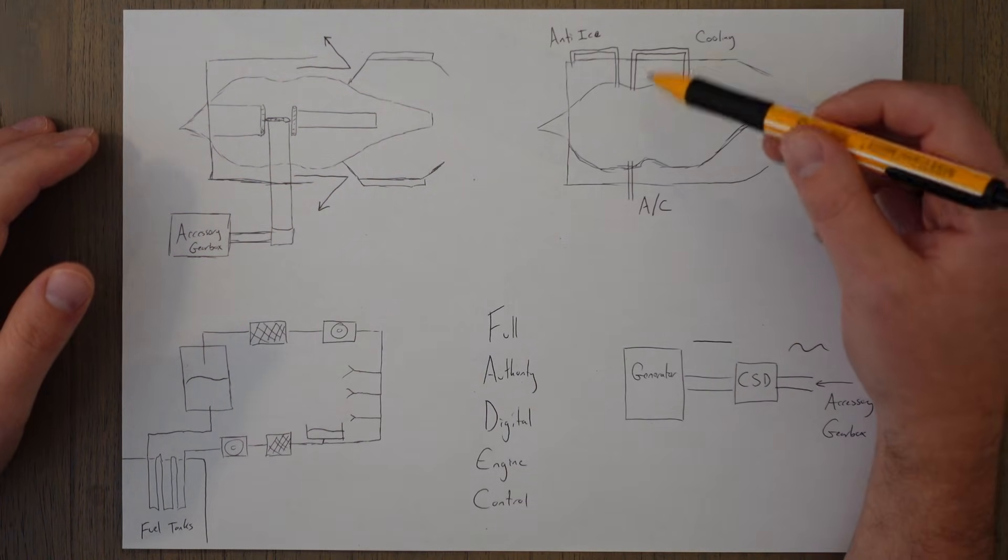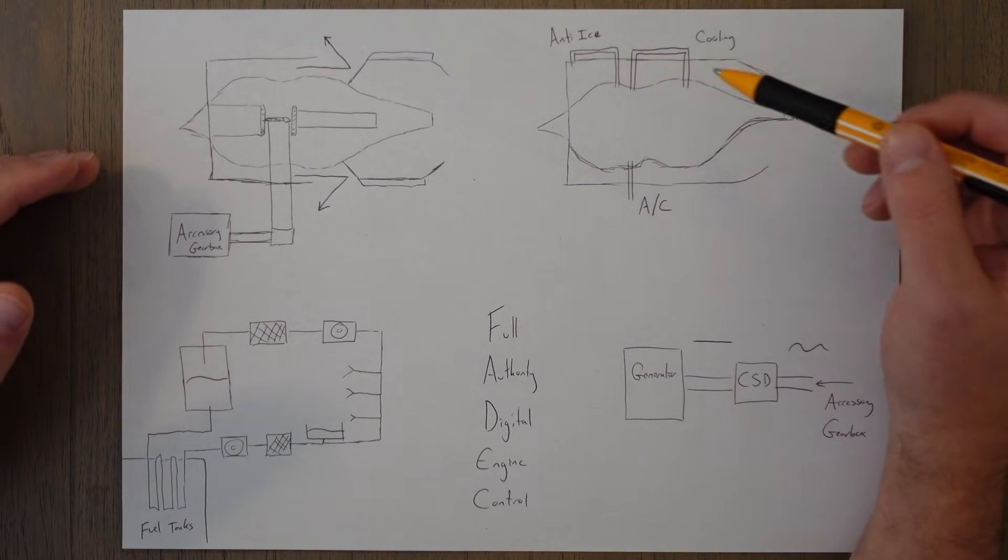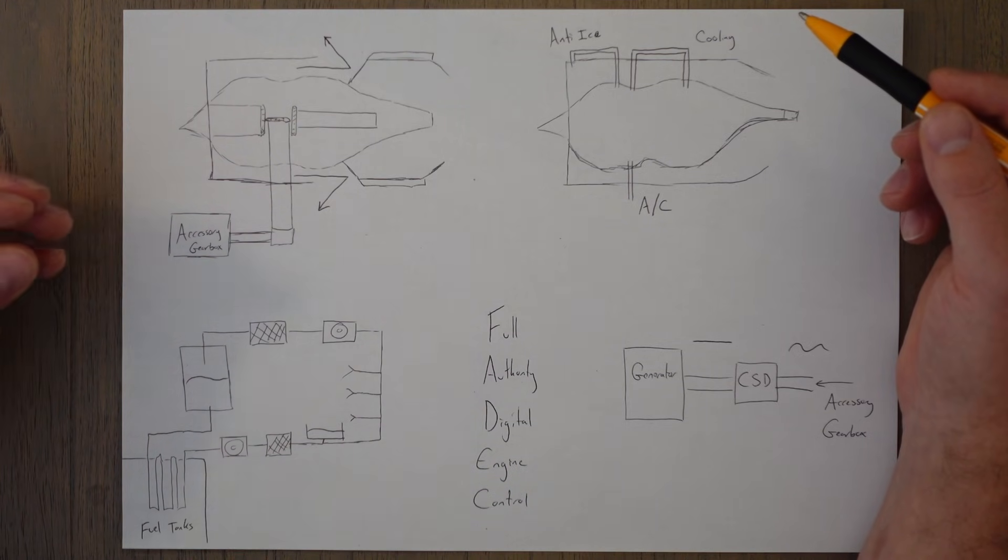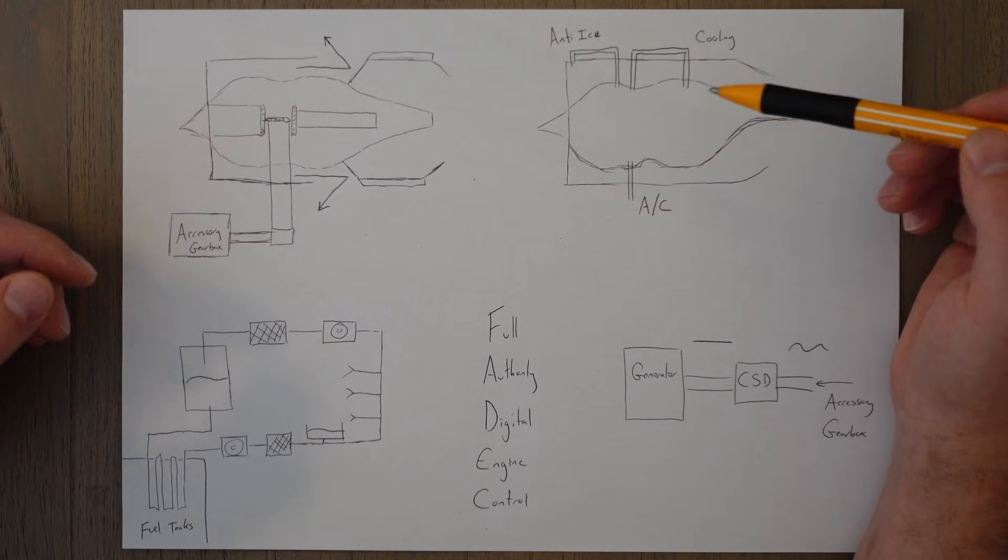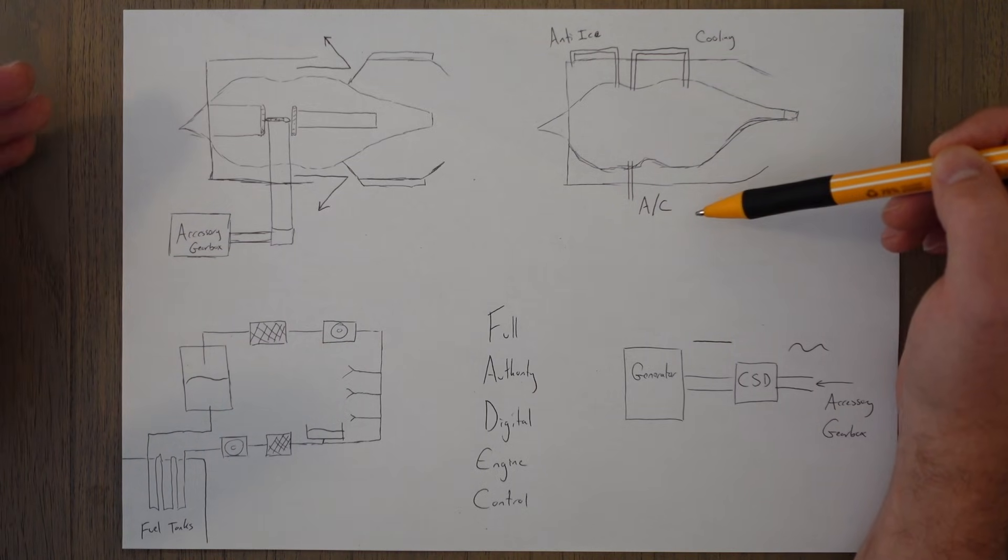The bleed system draws hot, high pressure air away from the compressor stage of the engine for use in other aircraft functions. It's one source of power that we have, with the accessory gearbox being the other source of power. The bleed air can be used to run the aircraft's air conditioning system and pressurization system.